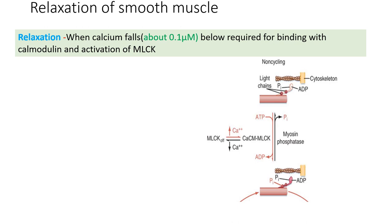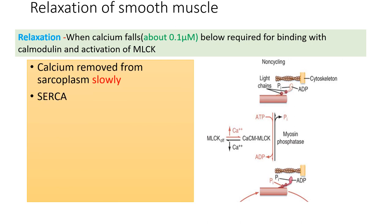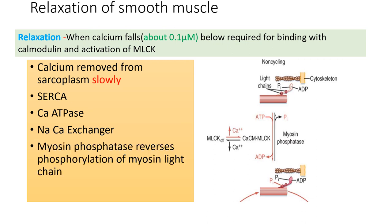Relaxation of smooth muscle occurs when the calcium level falls below 0.1 micromolar — lower than the threshold required for binding with calmodulin — so the calcium-calmodulin complex and activation of myosin light chain kinase do not occur, and the muscle enters a non-cycling or relaxation phase. Calcium in the myoplasm is removed by the calcium-ATPase pump in the sarcoplasmic reticulum, the calcium-ATPase pump in the sarcolemmal membrane, and the sodium-calcium exchanger. All three act slowly to pump calcium into the sarcoplasmic reticulum or cell exterior. Myosin phosphatase reverses phosphorylation of the myosin light chain, completing the relaxation process.